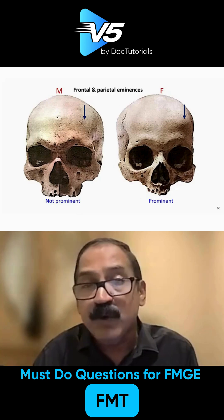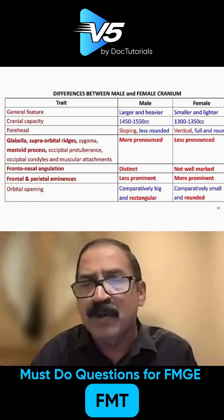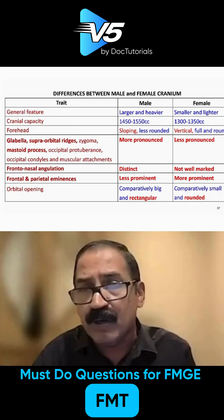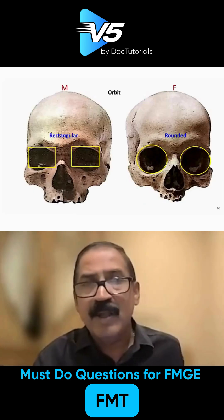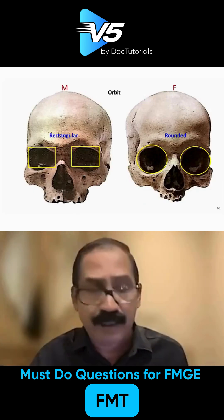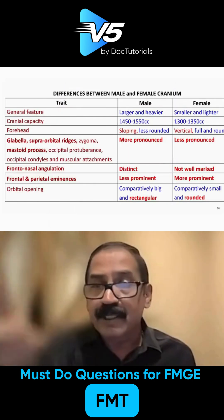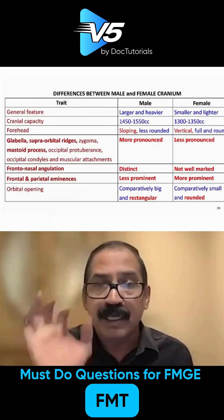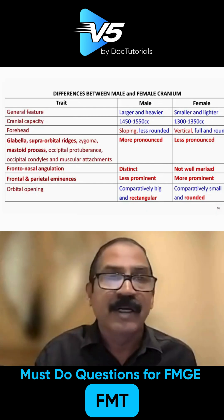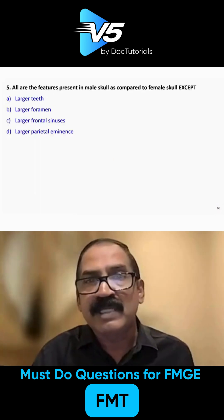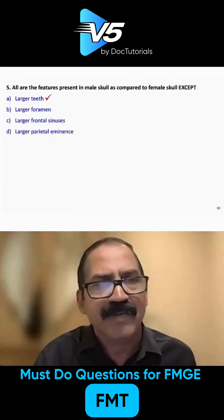In females, frontal and parietal eminence are more prominent. The orbital opening is somewhat rectangular in males and somewhat circular or rounded in females. Now you know how to differentiate. Finally, you can see the full chart — whatever is in red is very important. All features present in male skull compared to female skull — except larger teeth, which are also present in males.